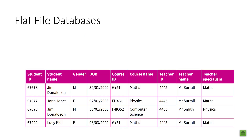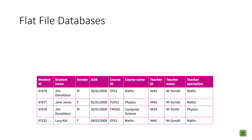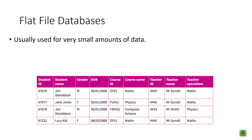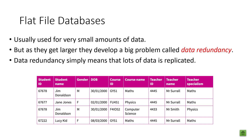Let's look at our first real piece of information: the flat file database. A flat file database is information held in a single table. Each column in the table is called an attribute and each row is called a record. As we add more data over time, the database grows larger and develops a big problem called data redundancy — which means a lot of data is getting replicated.